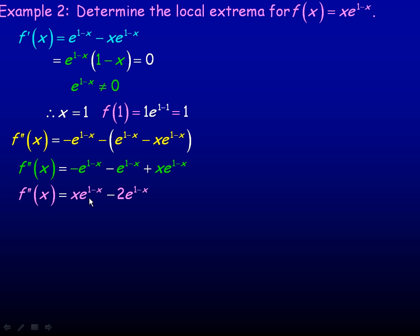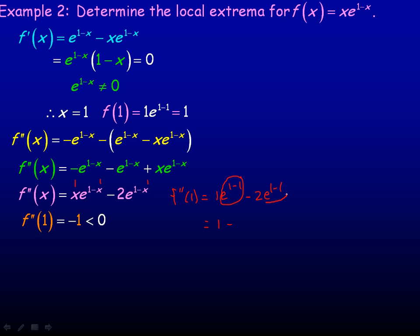The sign of the second derivative tells us about concavity and whether we have a local minimum or maximum at the point (1, 1). Evaluating f''(1): substituting x = 1 gives 1 · e^(1-1) minus 2 · e^(1-1). Since e^0 = 1, this simplifies to 1 minus 2, which equals negative 1. So f''(1) = -1.